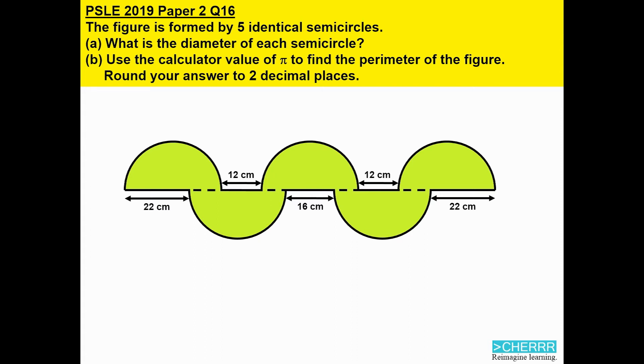Firstly, I'm going to draw 2 vertical lines to mark the 2 ends of this figure. Next, I'm going to deal with the top part where we see 3 semicircles and we have 2 straight lines with the measurements 12 and 12.